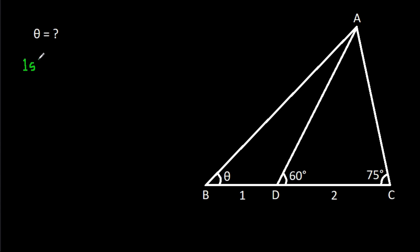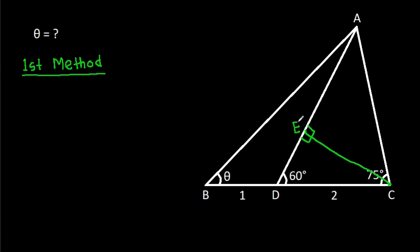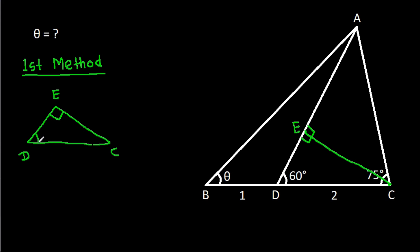The first method: from point C, if we make a perpendicular on AD, suppose this point is E, then in angle ECD — this angle is 90 degrees, this angle is 60 degrees — so this angle will be 30 degrees.